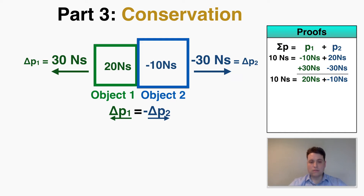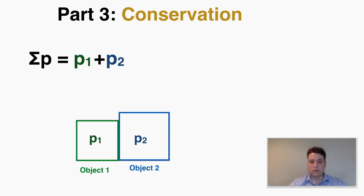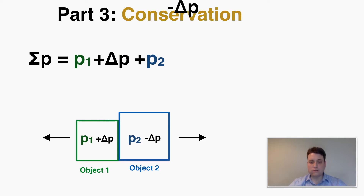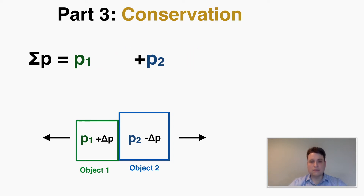No matter what impulse I choose to put on object one, object two is always going to experience that same impulse but in the opposite direction, so whatever I add to object one I have to take away from object two. When I plug both into my equation for total momentum, they cancel out. So the total momentum always remains at the same amount it started with, as long as those two objects are the only things putting forces on each other.